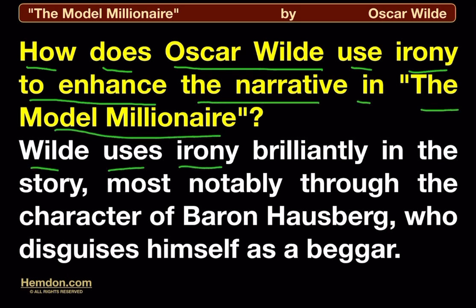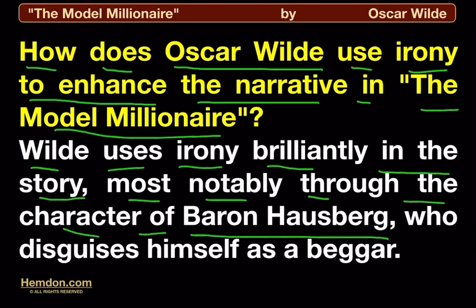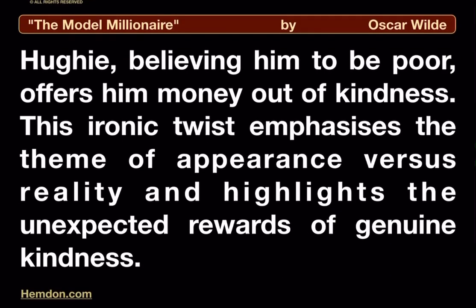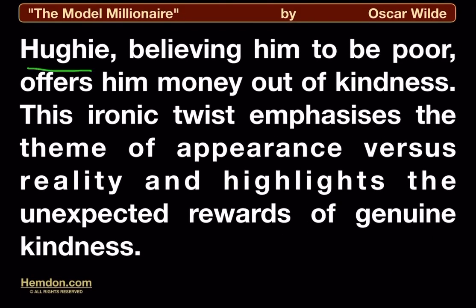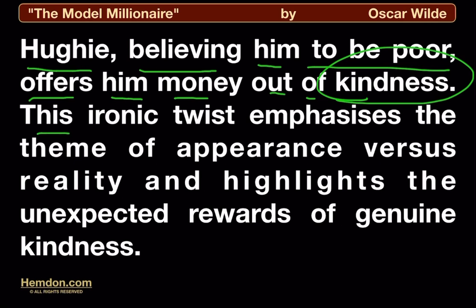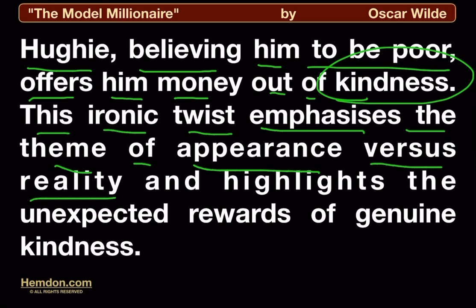Wilde uses irony brilliantly in the story, most notably through the character of Baron Hausberg who disguises himself as a beggar. Huey, believing him to be poor, offers him money out of kindness. This ironic twist emphasizes the theme of appearance versus reality and highlights the unexpected rewards of genuine kindness.